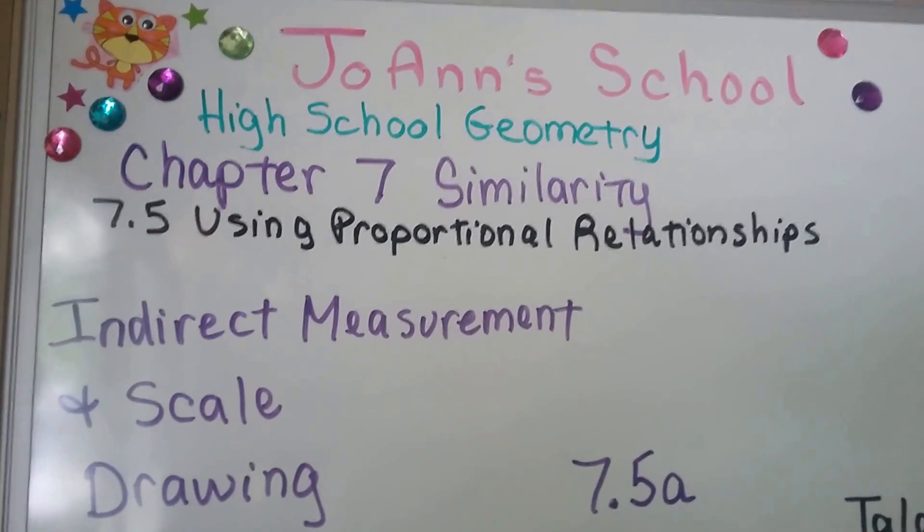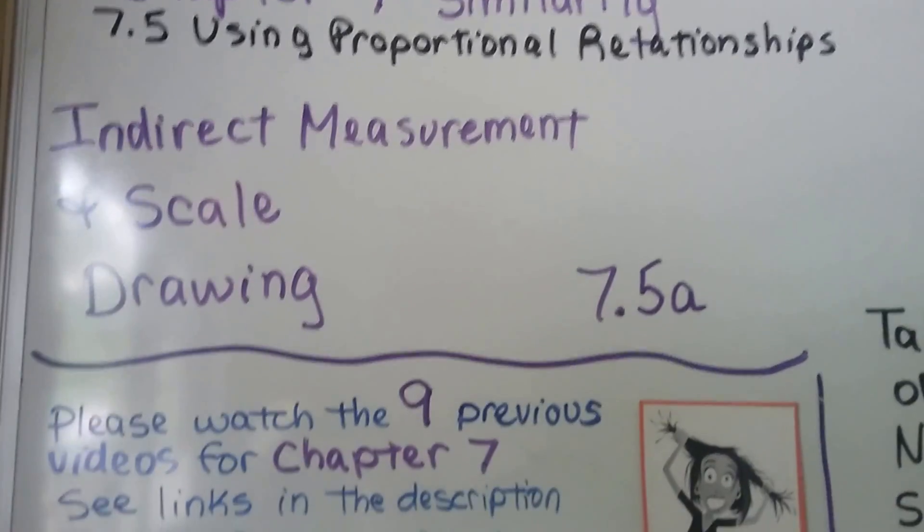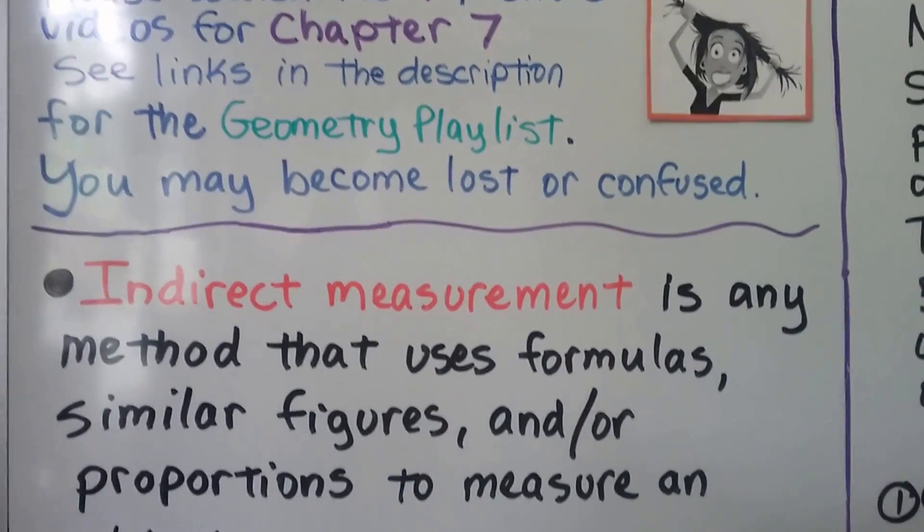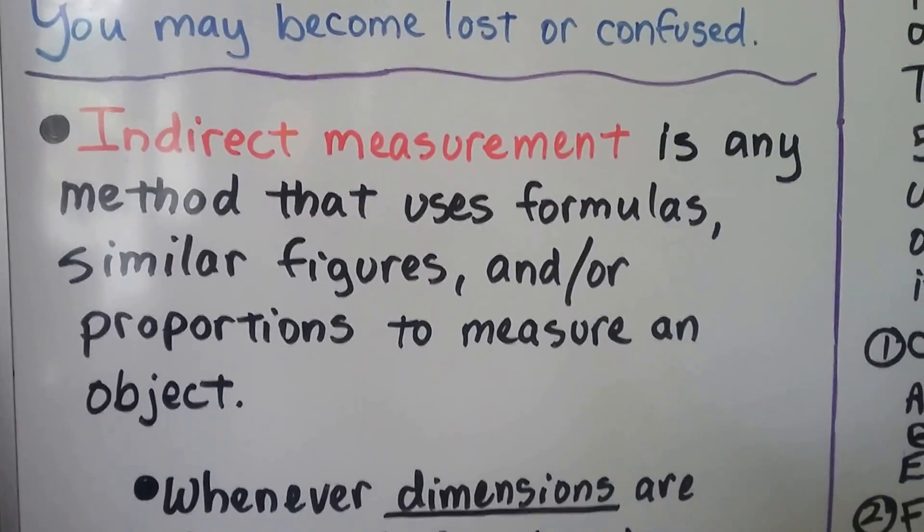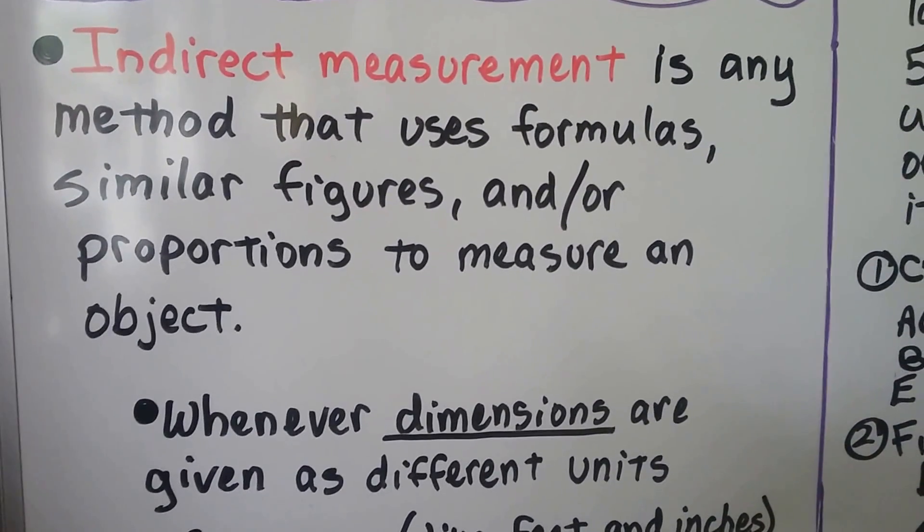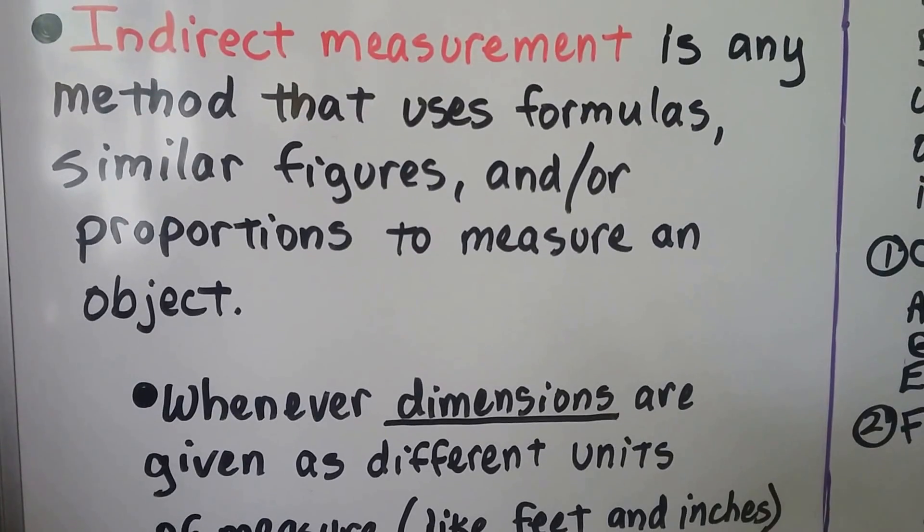Indirect measurement and scale drawing are at 7.5a with nine previous videos for chapter 7 that could possibly help you in the geometry playlist. Indirect measurement is any method that uses formulas or similar figures and proportions to measure an object.